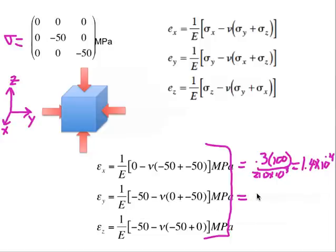This solution, since the units are here in terms of gigapascals, this solution will give us minus 1.67 times 10 to the minus 4. And this one should be the same. It's minus 1.67 times 10 to the minus 4.